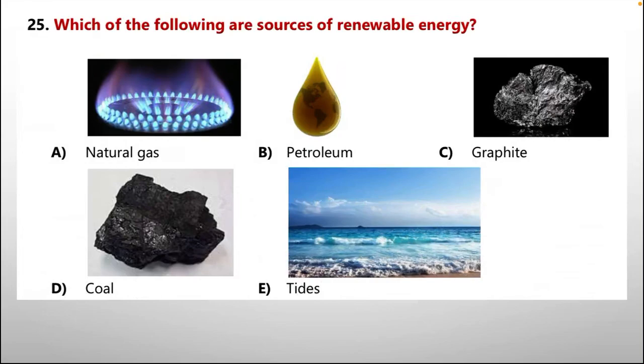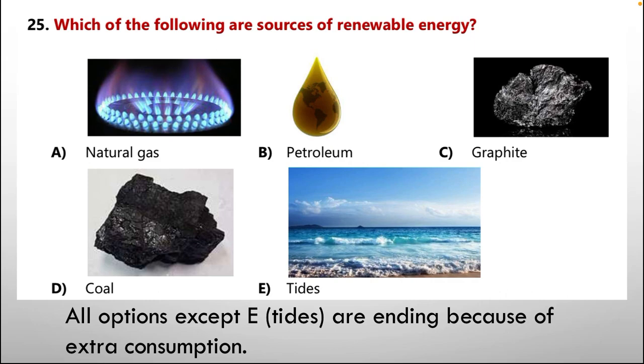Question number 25. Which of the following are sources of renewable energy? Option number A: Natural gas. B: Petroleum. C: Graphite. D: Coal. E: Tides. Well, all of the following are non-renewable energy. Because with the passage of time, they are going to become destroyed or ended naturally. However, option number E, tides are not ending. So, option number E is our correct option because all options except E tides are ending because of extra consumption.